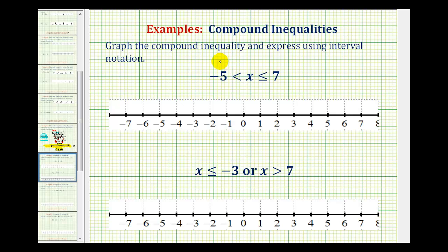Now we'll take a look at two basic examples of compound inequalities. Compound inequalities are two or more inequalities connected with the words AND or OR.